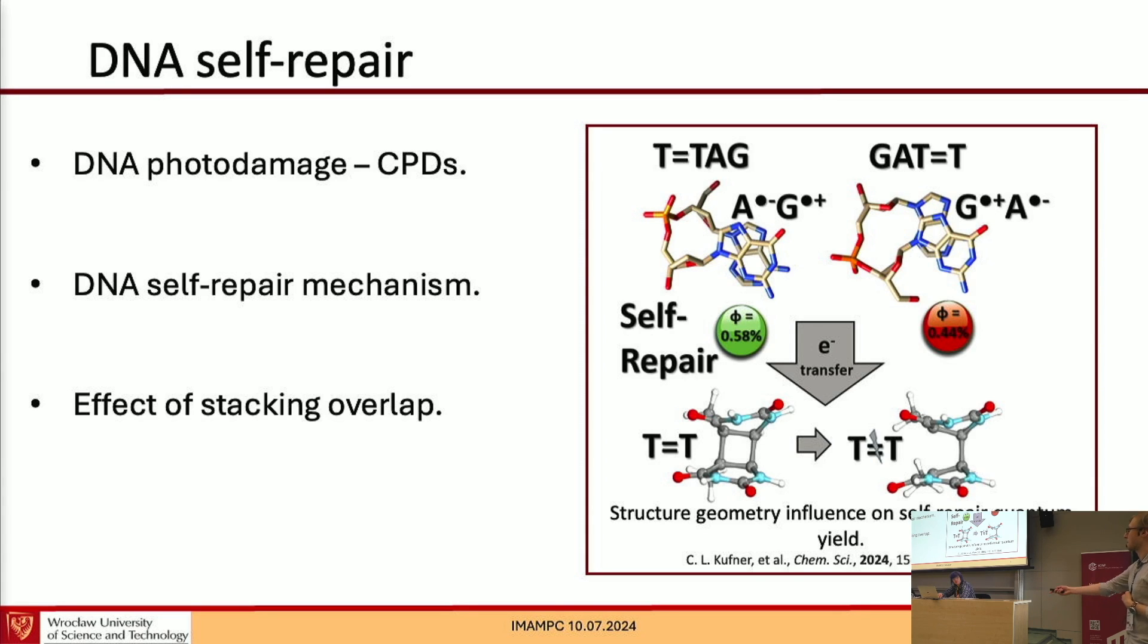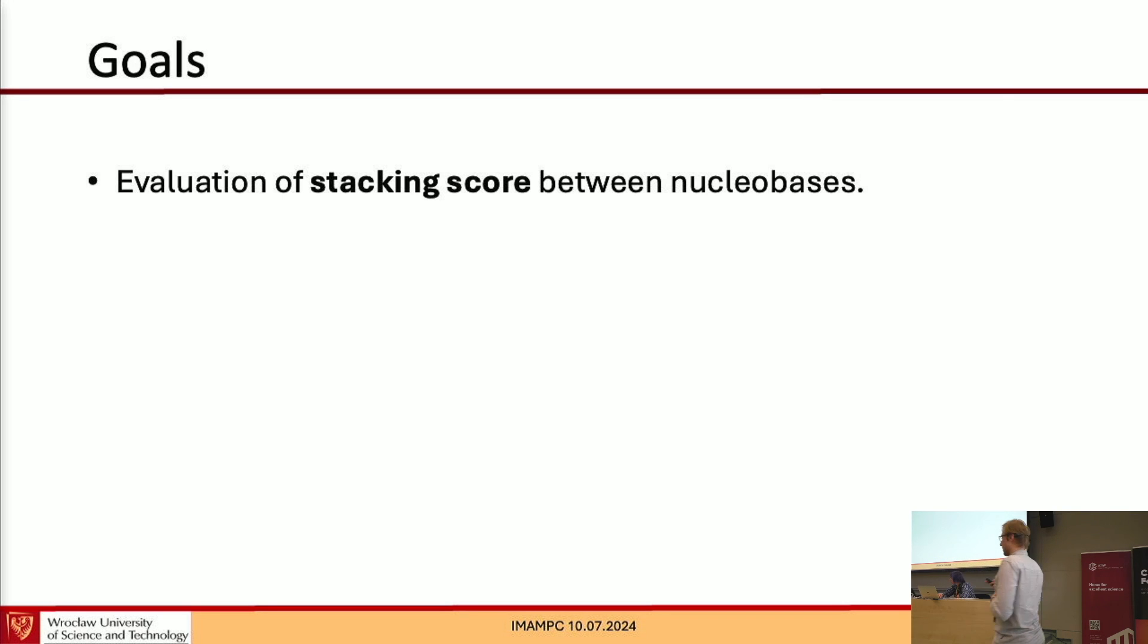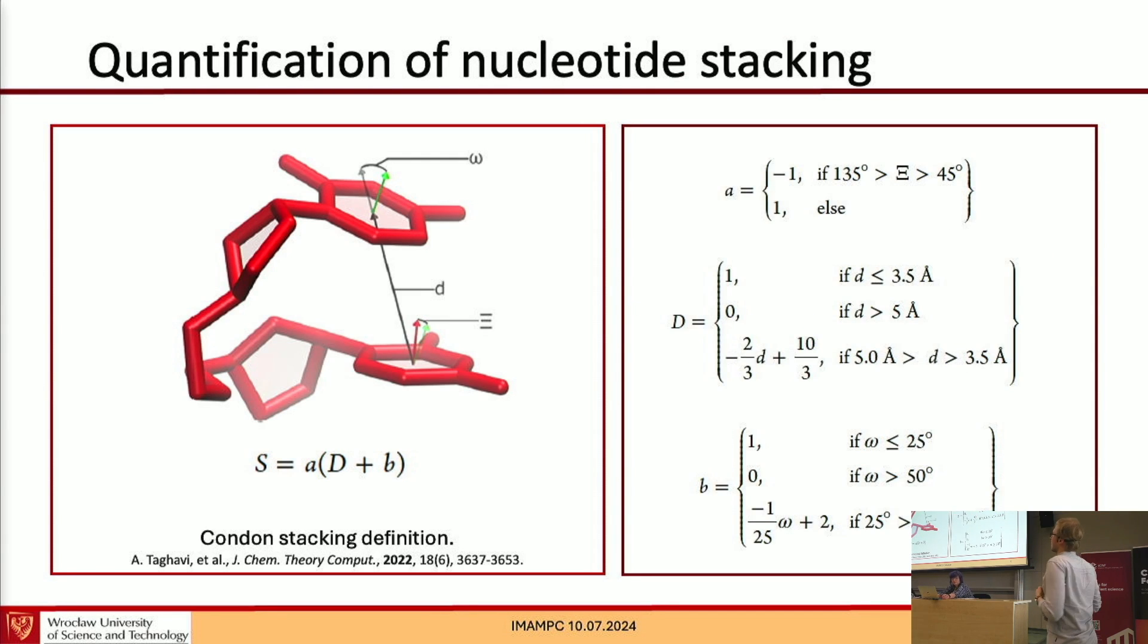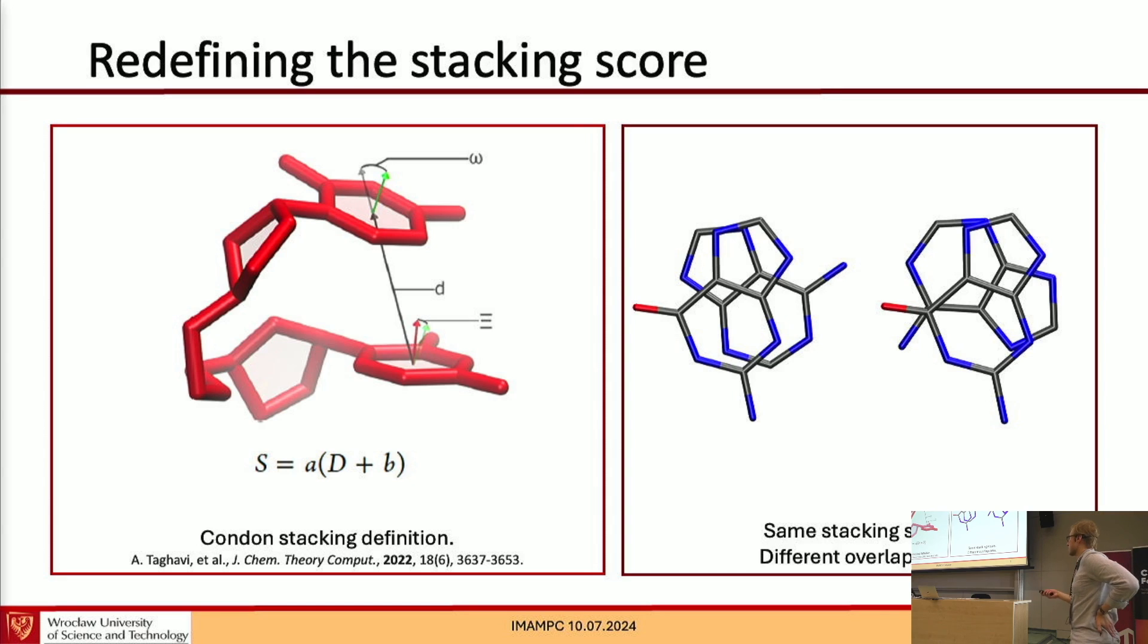This brings me to the first goal of the study, which is to find a method for evaluation of this stacking score between nucleobases. Of course, in the literature, there were some such algorithms published before. For example, this canonical stacking definition that uses parameters such as distance between the centroid of the bases and a couple of angles. However, I wasn't able to find any algorithm that would use the overlap area of these two bases directly. And this is important because looking at such a simple example, the canonical stacking definition should give us the same result, the same stacking score for these two systems, even though the area is different. They are oriented differently.